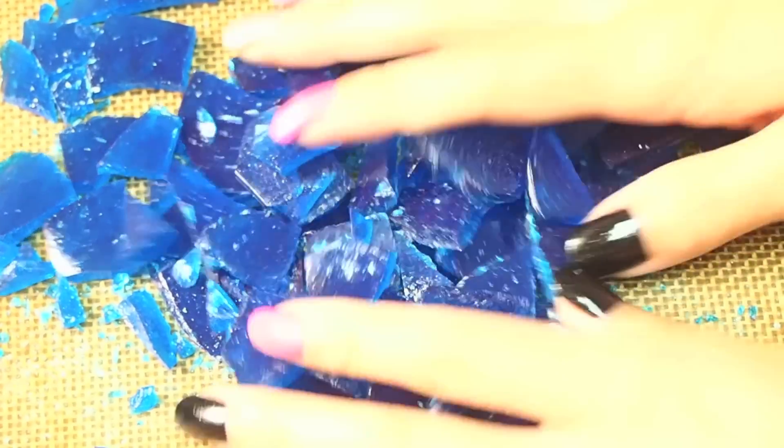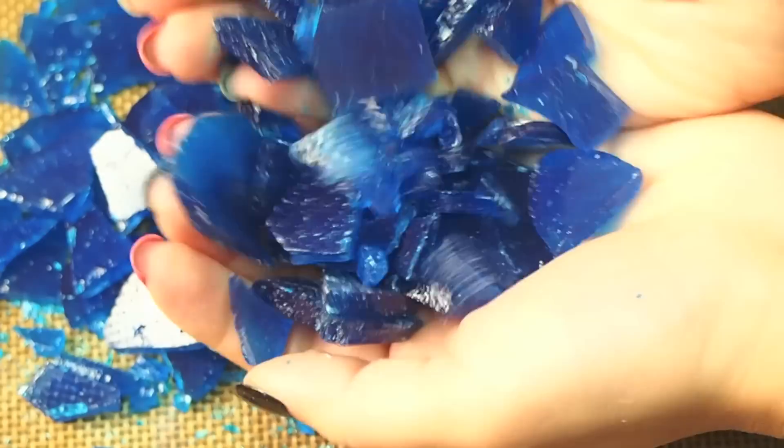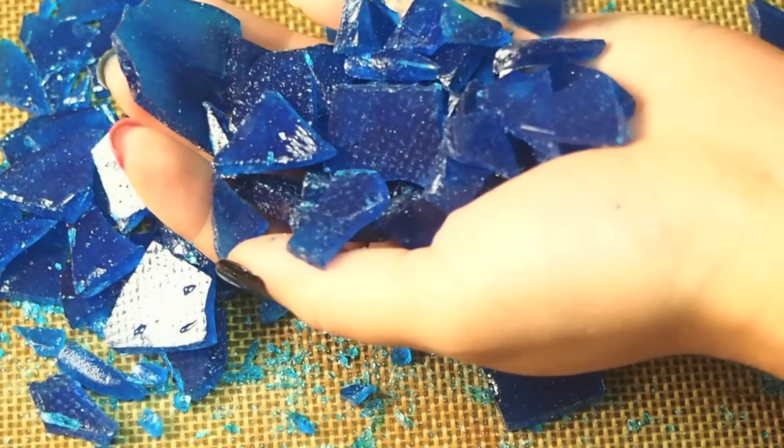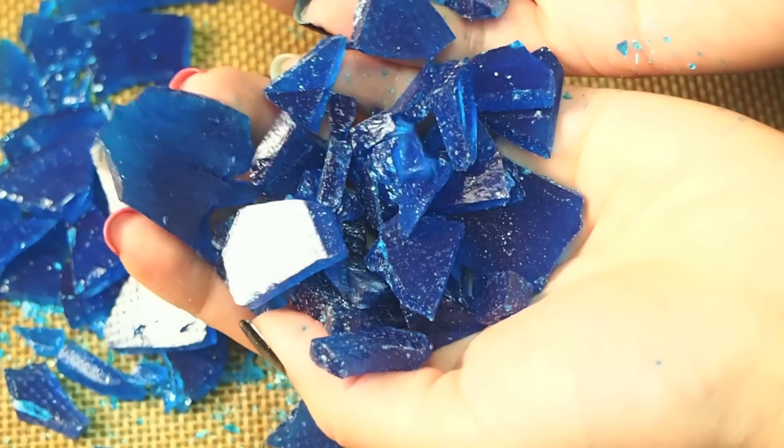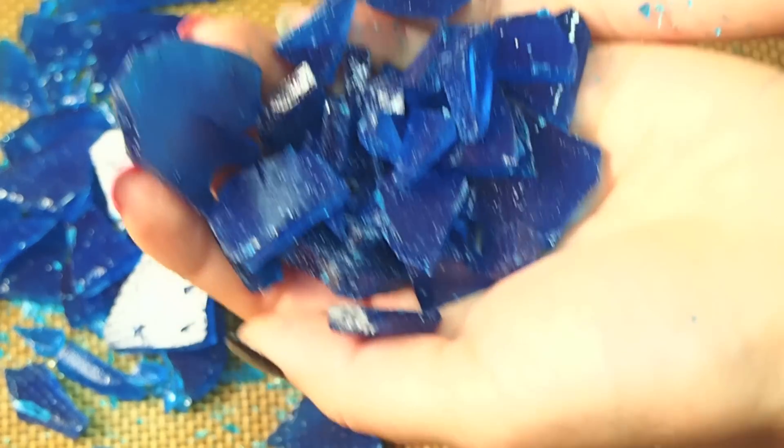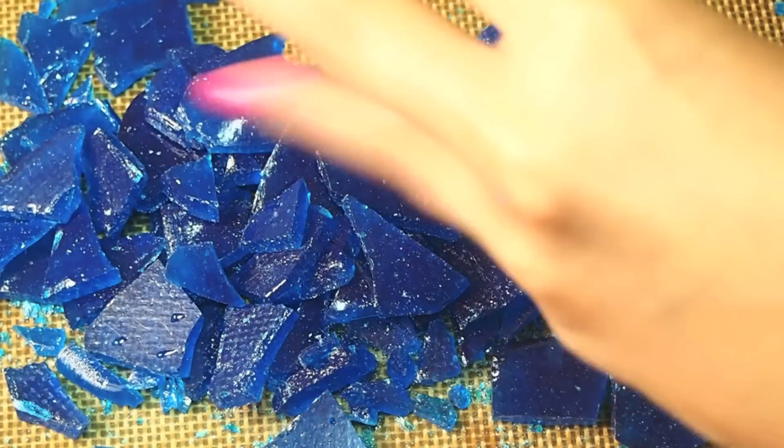What you end up with are these blue, sparkling, sapphire pieces. Like this. You can put them in little glassine or little candy bags or whatever you want to serve them in. They're really fun and perfect for Breaking Bad.